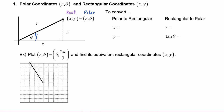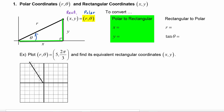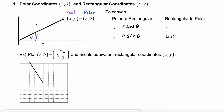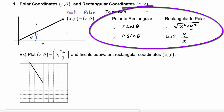We've explored this quite a bit with vectors and with the trig form of complex numbers. Just like in those situations, we can do conversions. If we know the polar coordinates r and theta, then x equals r cosine theta and y equals r sine theta. If we know the rectangular coordinates x and y, then r equals the square root of x squared plus y squared, and tangent of theta equals y over x. These four equations are pretty familiar to us by now.